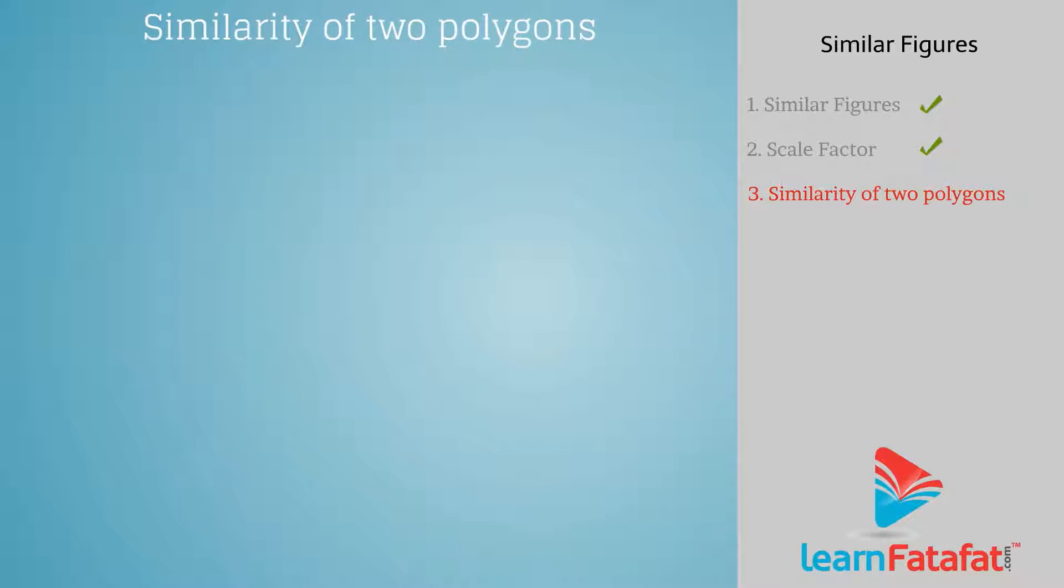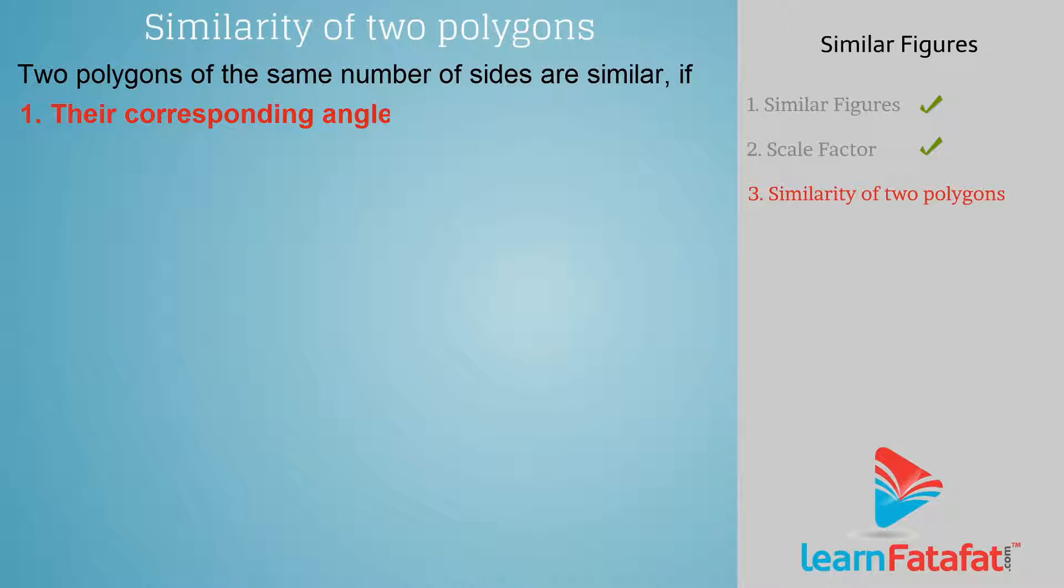Similarity of two polygons. Two polygons of the same number of sides are similar if their corresponding angles are equal and their corresponding sides are in the same ratio.